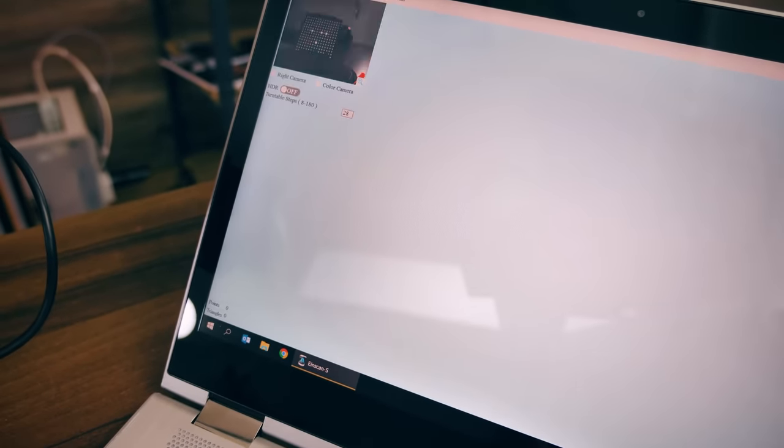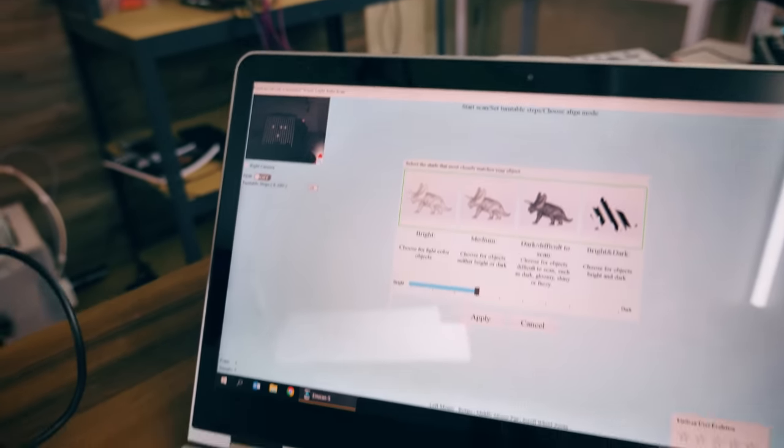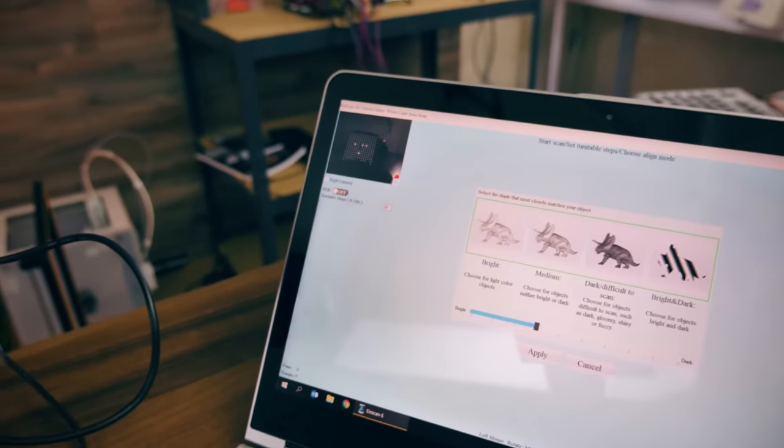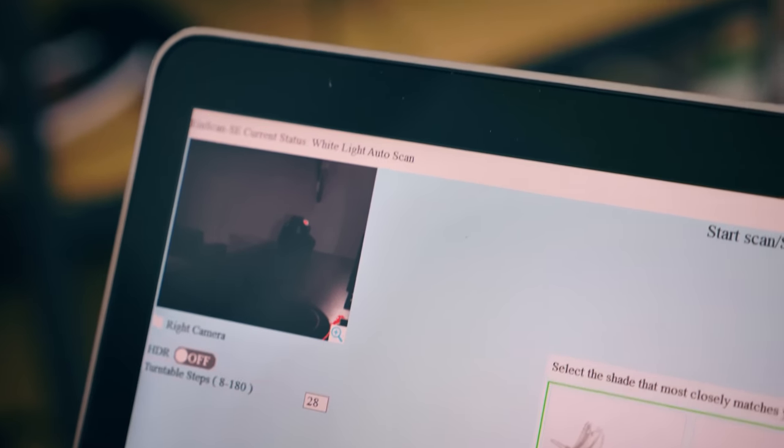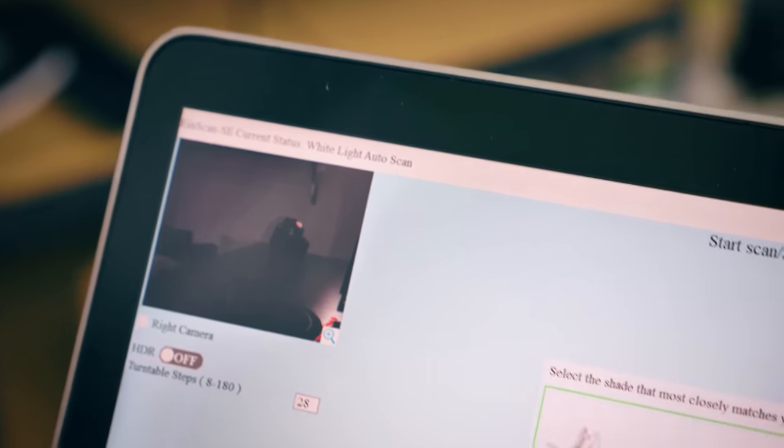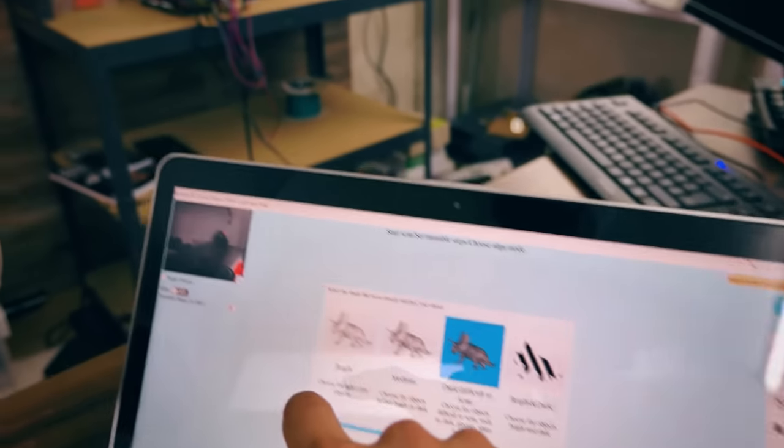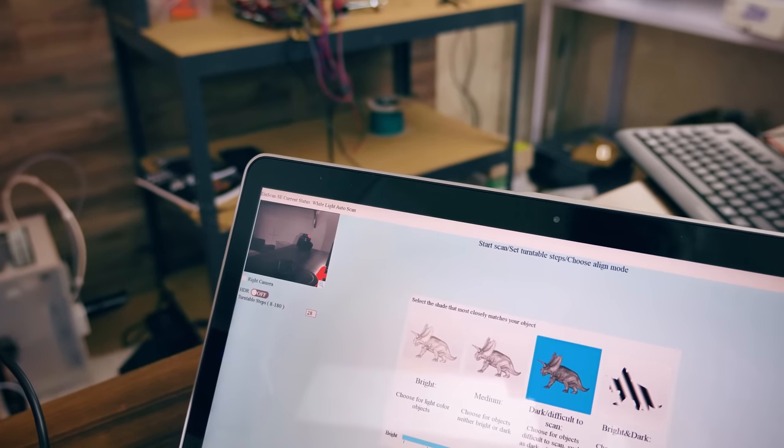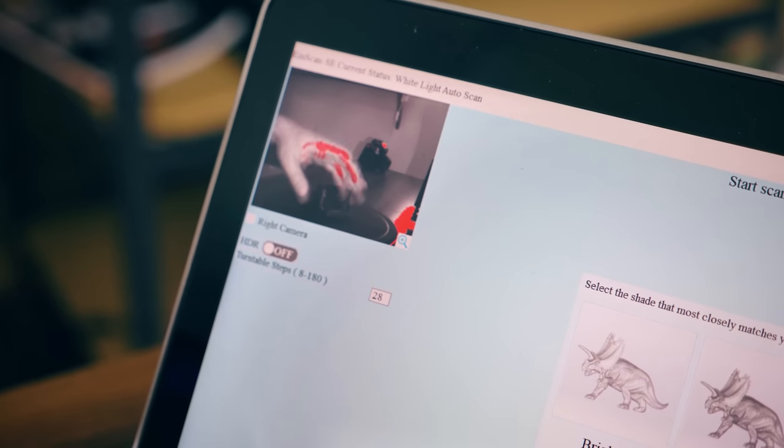Because in our case our object has pretty much no texture and we also don't need any texture, we're going to go with a non-textured scan. So first thing you do is you adjust your brightness. Right now it is very dark, you can see it right there. So we're going to go with dark difficult to scan and you can see it bumps up the exposure right there and it's going to be able to see a bit more of our object.